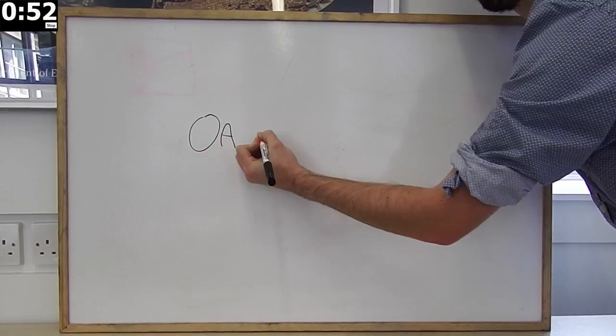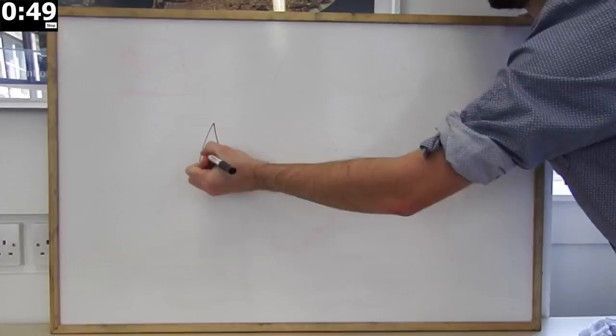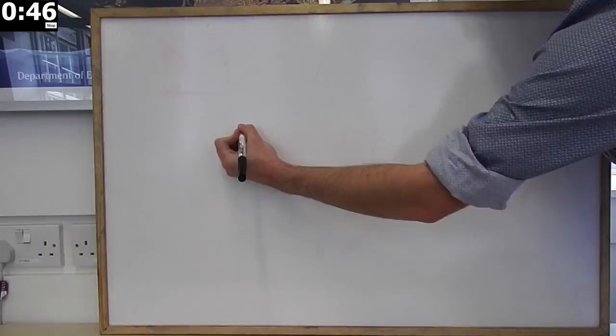One way of remembering these is using the acronym OASIS. This stands for orientation, annotation, scale, information, and sketch what you see.